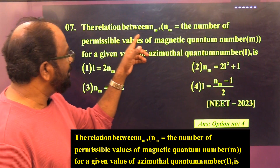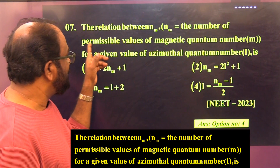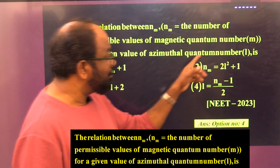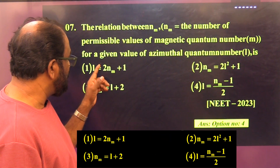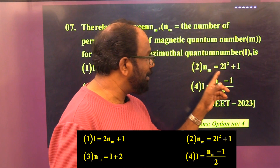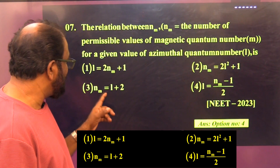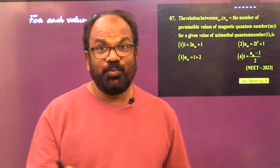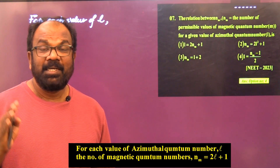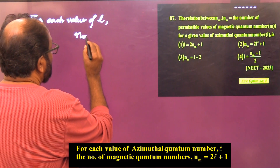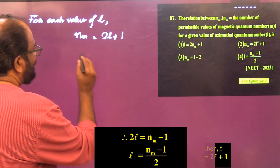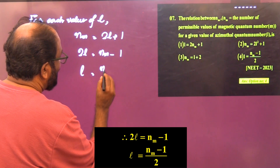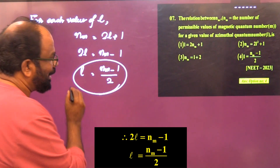Question number seven: The relation between nm (the number of permissible values of magnetic quantum number m for a given value of azimuthal quantum number l) is — Option 1: l = 2nm + 1; Option 2: nm = 2l² + 1; Option 3: nm = l + 2; Option 4: l = (nm − 1)/2. We know for each value of l, the number of magnetic quantum number values nm = 2l + 1. Therefore l = (nm − 1)/2, so the answer is option number four.